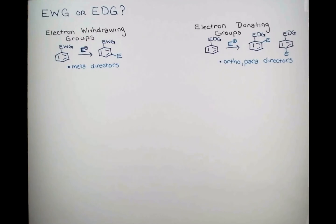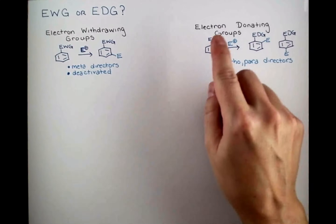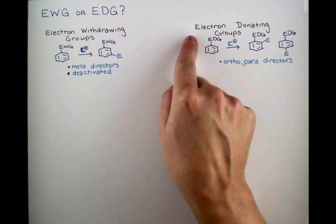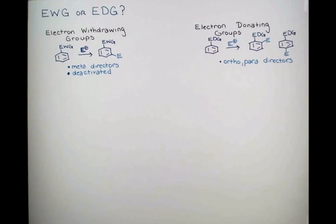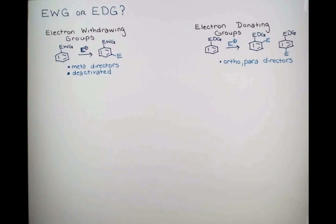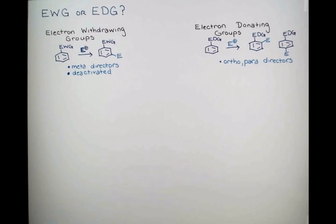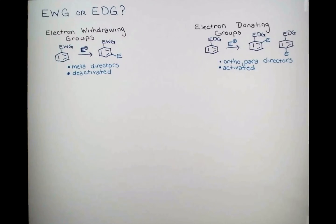We therefore say that these rings with electron withdrawing groups are deactivated. Conversely, these electron donating groups have electrons they can donate into the ring, either through resonance or an inductive effect. Because of the added electron density on rings containing electron donating groups, we say that electron donating groups are activating groups. This is because the ring is more likely to undergo electrophilic aromatic substitution when an EDG is present on the ring.